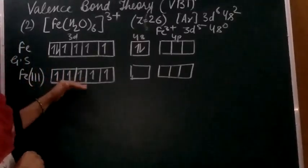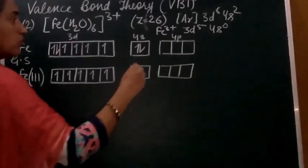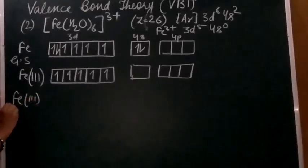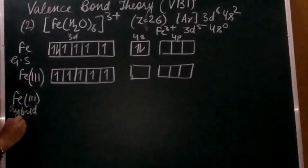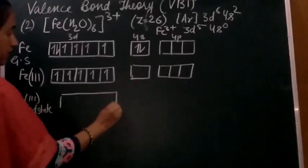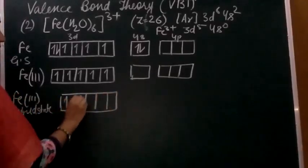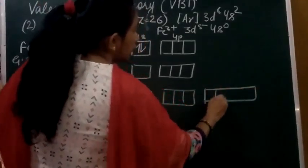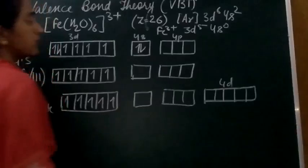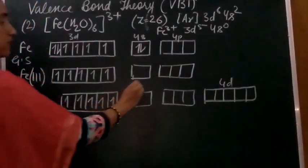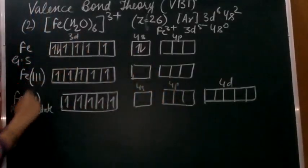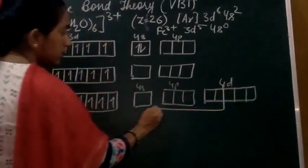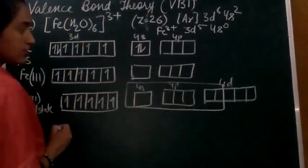Since all 3d orbitals are filled with 5 electrons and none are available for bonding, we need to use the outer 4d orbitals. In the hybrid state, we show: 4s, 4p, and 4d orbitals. The coordination number of iron here is 6, giving us 6 orbitals involved in hybridization.